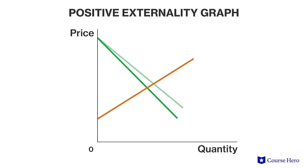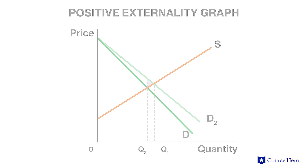An externality can also be positive, where additional benefits accrue to people not directly involved in the economic activity. For example, governments provide public education. This public good directly benefits the students attending school, but educated communities also provide additional benefits to society as a whole, such as improving people's personal lives and increasing economic growth.